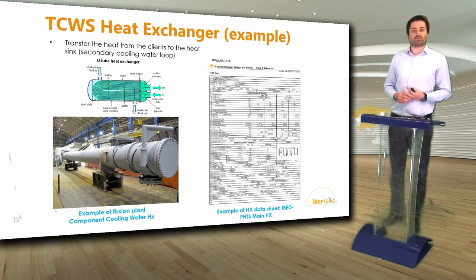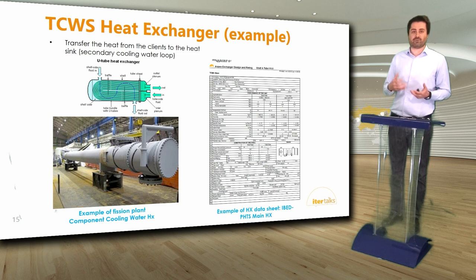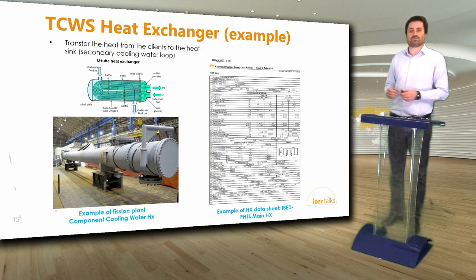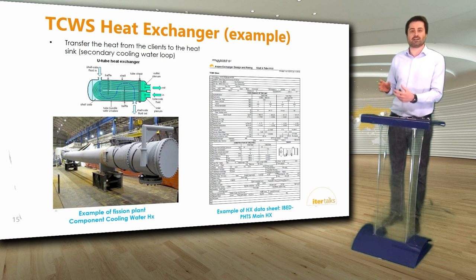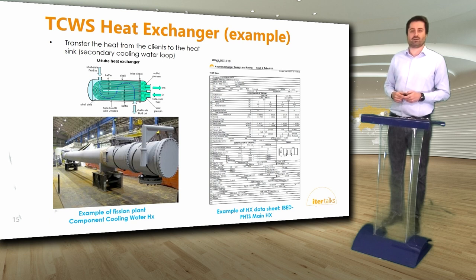Another major component is heat exchangers. The largest are for the IBED PHTS — the system cooling the in-vessel components. Their function is to cool the water so that cold water can be provided to clients. The heat extracted from clients such as in-vessel components is transferred to the secondary cooling water system through these heat exchangers. They are the functional interface between the TOKAMAK cooling water system and the secondary cooling water system. Different typologies of heat exchangers are used depending on the required heat load and temperature difference.